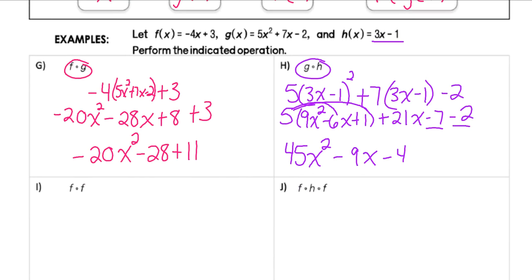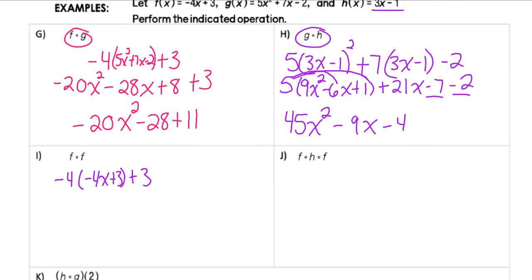For the next one, we're taking f(f(x)) — plugging f into itself. So I take −4x + 3 and replace x with (−4x + 3): −4(−4x + 3) + 3. Distributing gives 16x − 12 + 3. Combining like terms gives 16x − 9.